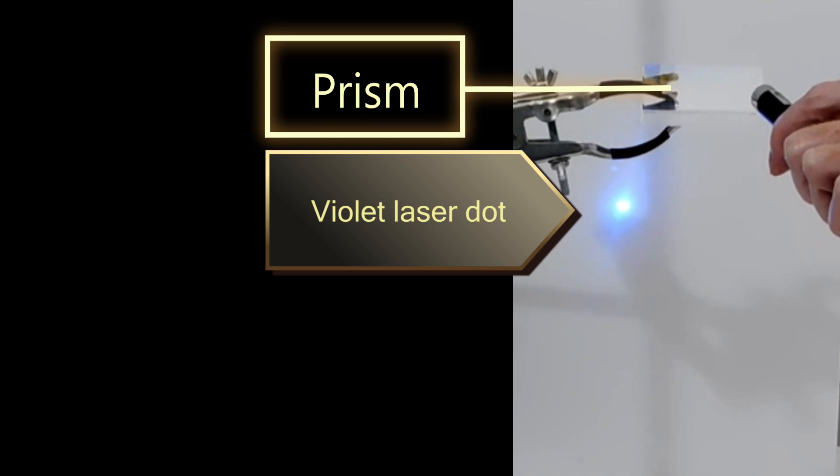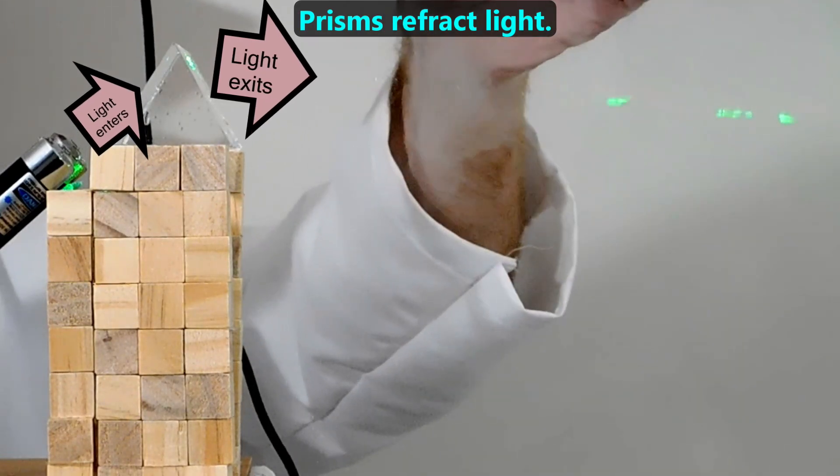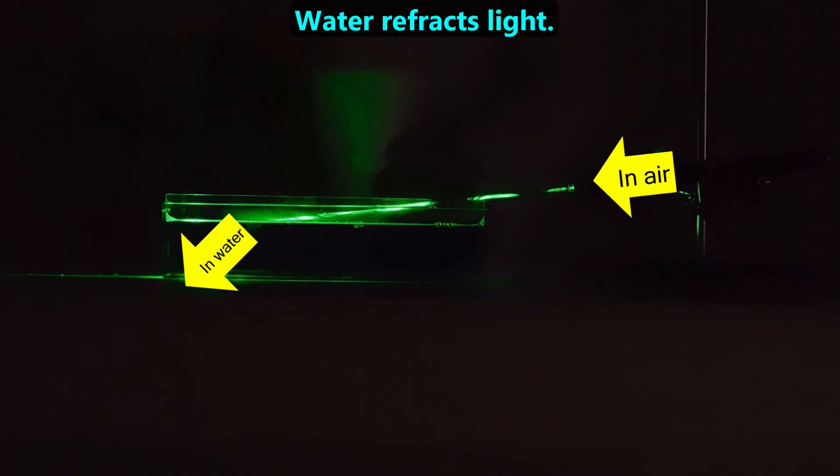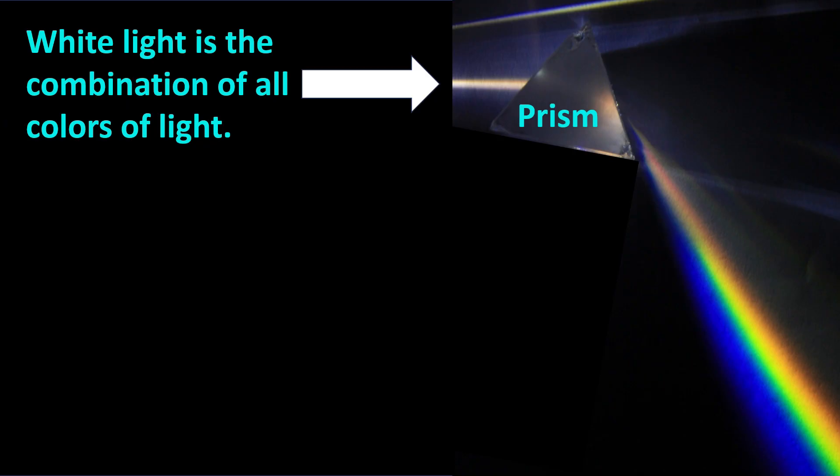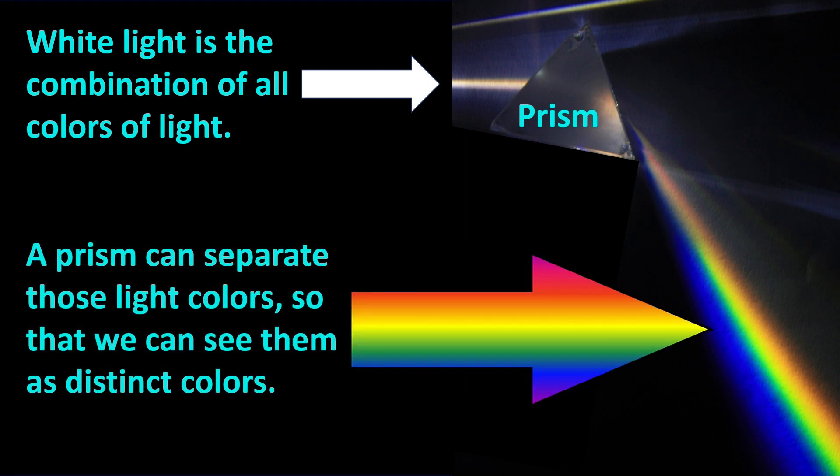Although there were no lasers around when Newton lived, we can use them to show that, just as he described, whatever color or colors go into a prism is the same color that comes out. We can also see that the prism bends light in a process called refraction. Water can also do this, as we demonstrated in the prior video. Newton concluded that what we perceive as white light is really the combination of all colors of light, and that a prism can separate the light so we can see them as distinct colors.